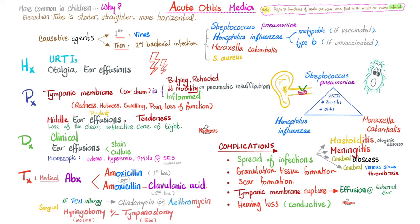The patient presents with a history of upper respiratory tract infection, ear pain, and maybe ear effusions — redness, hotness, swelling, pain, loss of function. On physical exam, the tympanic membrane is bulging or retracted, and pneumatic insufflation otoscopy reveals decreased mobility of the eardrum. The eardrum is inflamed. The effusions in the middle ear are purulent, and if the eardrum has ruptured, the effusions escape and can be seen in the external ear as well.